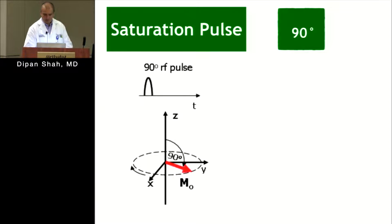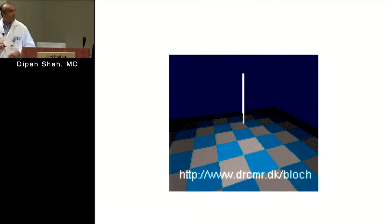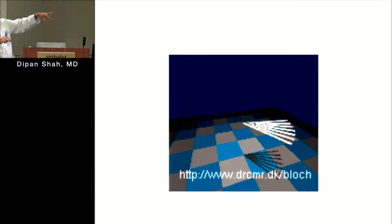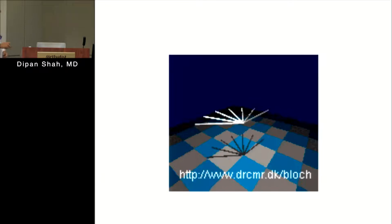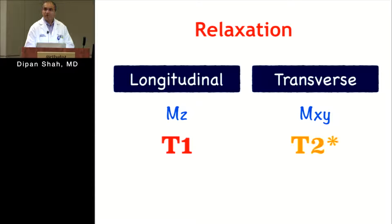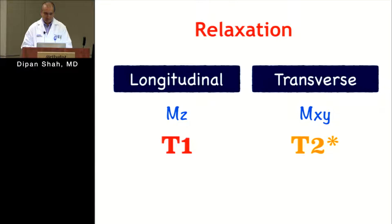There's also a second principle — in the transverse plane, protons simultaneously start to separate from each other. As they spin around, they start separating, and the net magnetization vector gradually decreases. That decay is T2 or T2-star decay. So you have T1 relaxation causing recovery in the longitudinal plane, and T2 causing loss of signal in the transverse plane. These two phenomena are happening concurrently, and in general T1 is slower than T2.